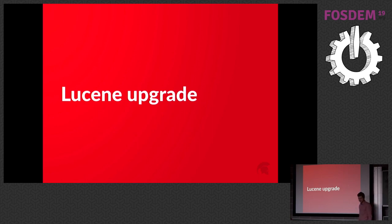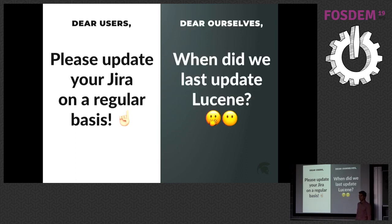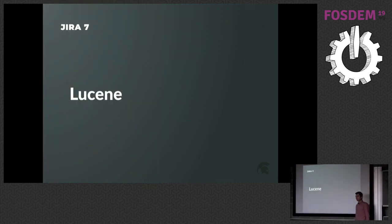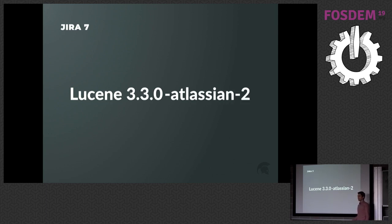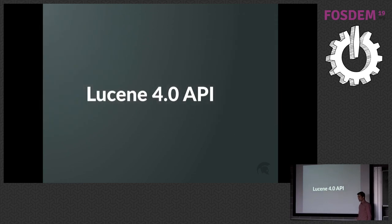Because search is so important, we should be up-to-date with what Lucene offers. In fact, we tell our clients to update JIRA regularly — get the latest version, get bug fixes, get new features. But unfortunately we don't always practice what we preach. JIRA 7 comes with Lucene 3.3, which was released in 2011 — and it's actually the 'dash-Atlassian-dash-2' version containing two crucial bug fixes ported from version 4. The reason we stayed so long on this old version is that between Lucene 3 and 4, the API was broken in a backwards-incompatible way, making the upgrade non-trivial.